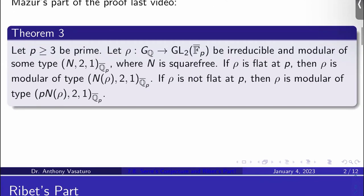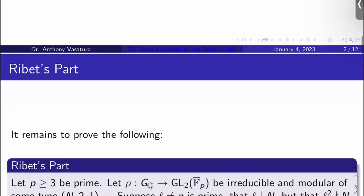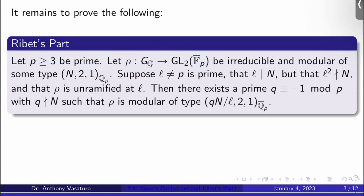Okay, so this will finish the proof of Ribet's theorem. What's left to prove is Ribet's part, which says: Let p ≥ 3 be prime. Let ρ: G_Q → GL_2(F̄_p) be irreducible and modular of some type (N, 2, 1) over Q̄_p. Suppose that ℓ is a prime that isn't p, that ℓ divides N, but that ℓ² doesn't divide N, and that ρ is unramified at ℓ.